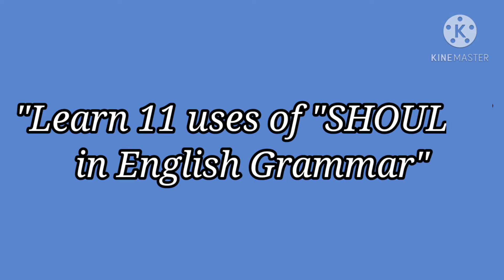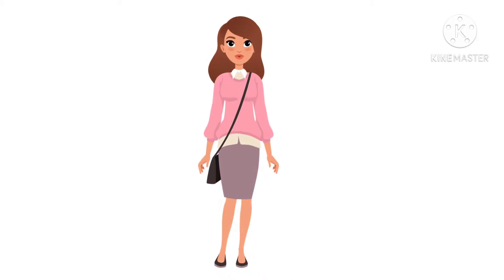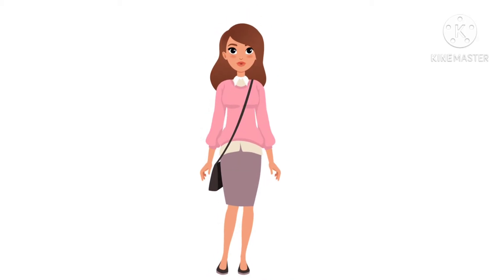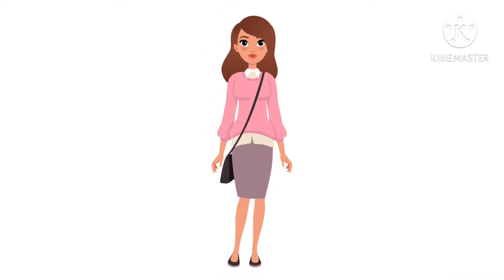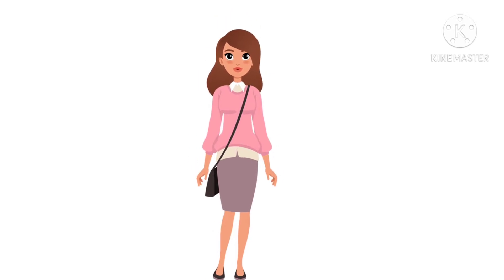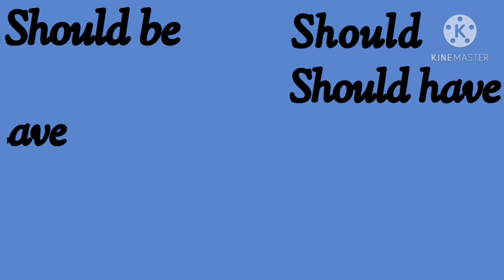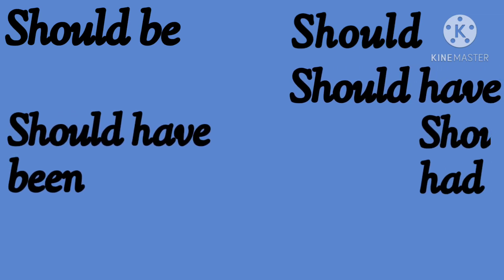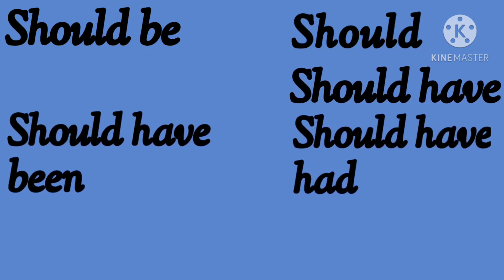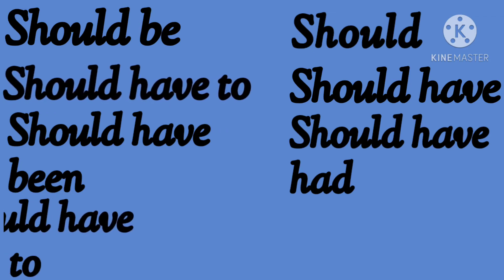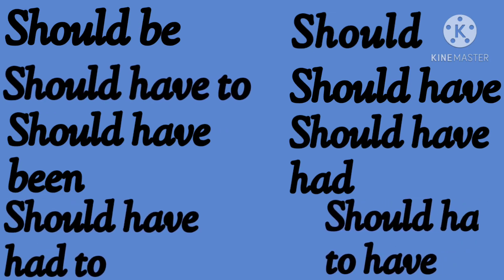Today we are going to talk about 11 uses of 'should' in English grammar. The forms we'll cover are: should, should be, should have, should have been, should have had, should have to, should have had to, and should have to have.